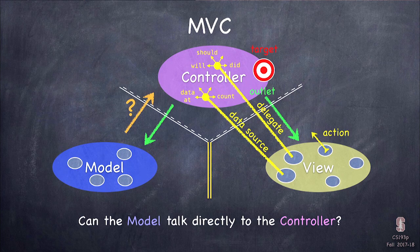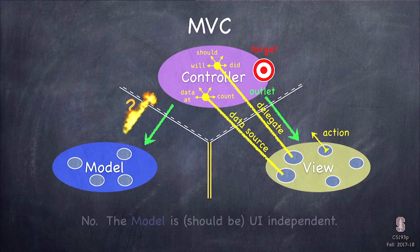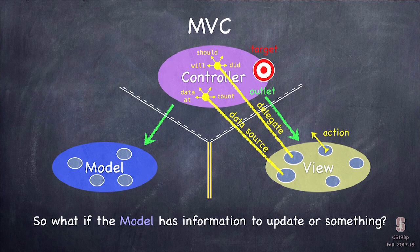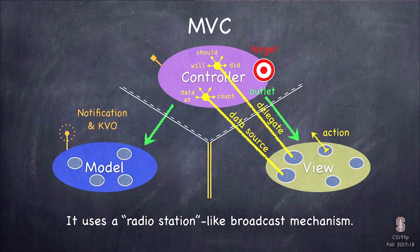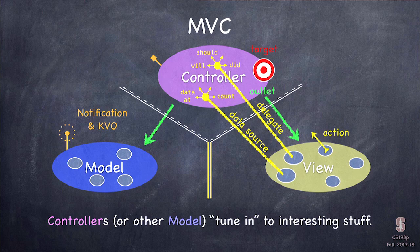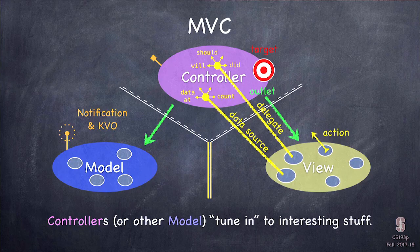Can the model talk to its controller? Not directly, because the model is UI-independent and the controller is fundamentally UI-dependent. But there is a mechanism — what I call a radio station model. The model broadcasts on a known radio station, and the controller tunes in. When it hears something changed, it uses its green arrow to go talk to the model and get the updated data. In iOS, this is called notifications or KVO — Key Value Observing.